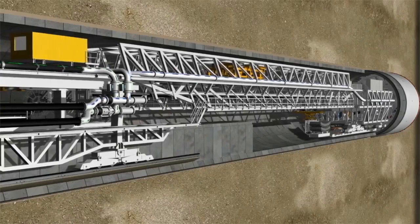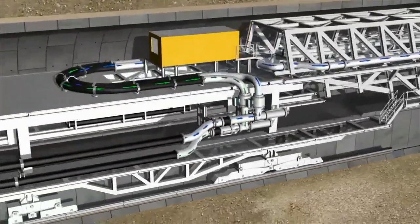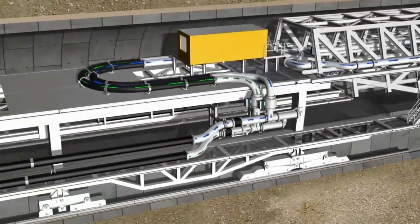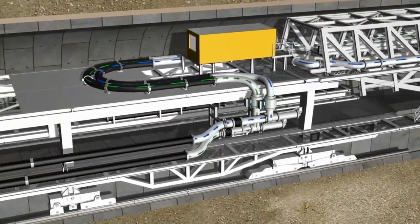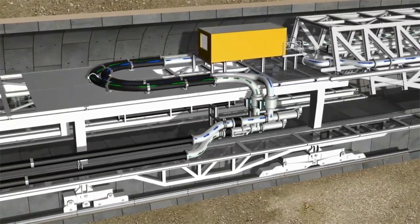As tunneling advances, the feed and slurry pipe connection is extended. Flexible extension lines are installed on the third gantry to prevent the pipeline's uncoupling after each thrust phase.